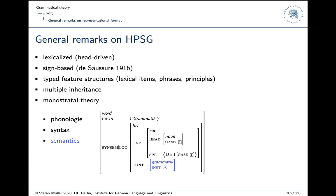If you believe in modules — separate parts of grammar — you can have that: everything under CAT would be the syntactic module, everything under CONT the semantics module, everything under phonology the phonology module. Zeevat talks about these modules and says they talk to each other all the time. That's what psycholinguistics tells us: we access information as soon as we have it.